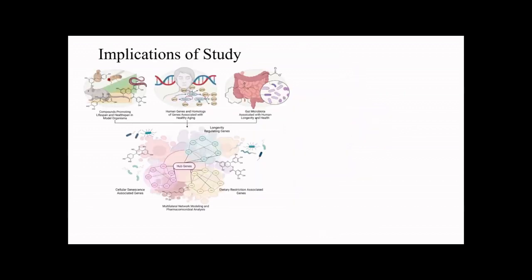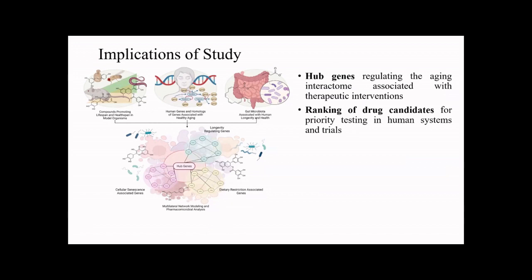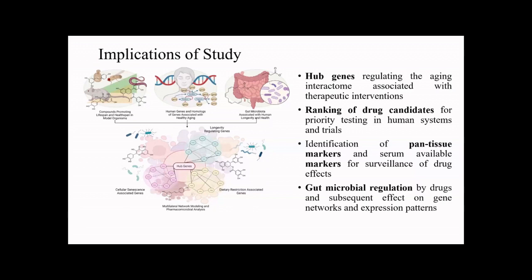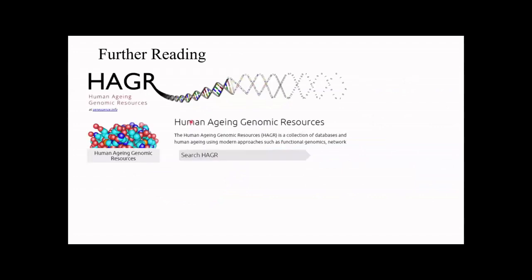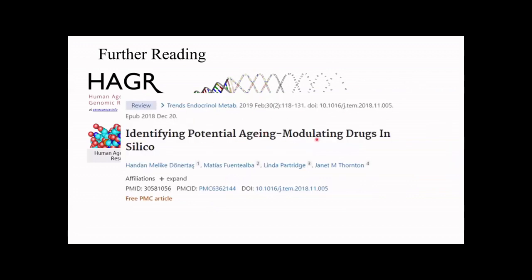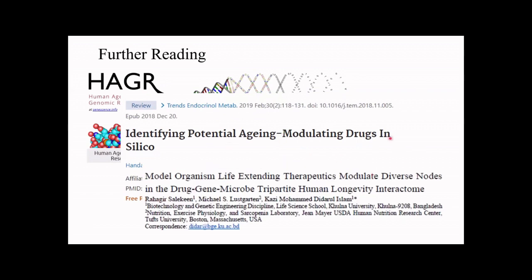In summary, our work takes a set of longevity-promoting drugs with evidence in model organisms, human genes and human gene homologues of these model organisms, as well as the gut microbial interactions associated with longevity, and constructs a holistic network to ideally find hub genes regulating the aging interactome associated with therapeutic interventions. This is for ranking of drug candidates for priority testing in human systems and trials, for identification of pan-tissue markers and serum available markers for monitoring of drug effects in aging, and finally gut microbial regulation by drugs and subsequent effect on gene networks associated with aging and their expression profiles. If you're interested to learn more about the biology of aging and the application of computational biology, the Human Aging Genomic Resources is an excellent place to start. We also highly recommend works from the Partridge and Thornton group in modeling aging networks, and of course our own work that should be done with peer review and published in a few days.